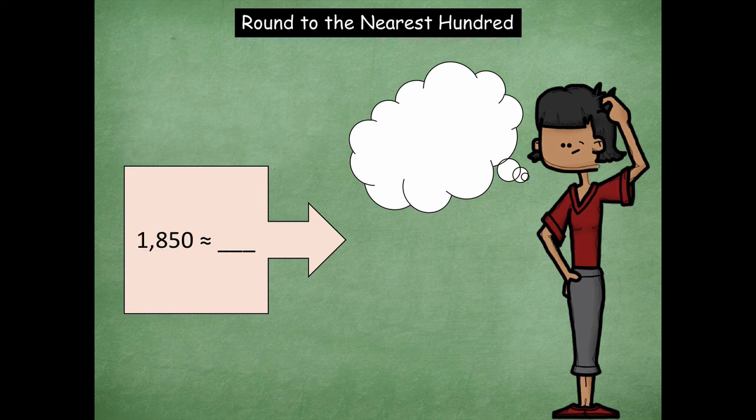We have 1,850. Go ahead and round that to the nearest hundred. Here we go. 1,900. Okay? 900. Whoops. Oh, I gave that one away.